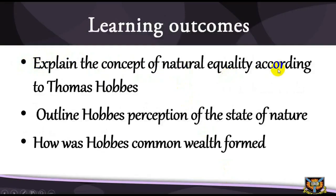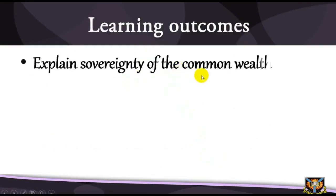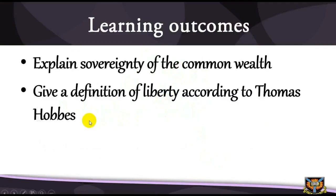Learning outcomes: when you have studied this session, you should be able to explain the concept of natural equality according to Thomas Hobbes, outline Hobbes's perception of the state of nature, explain how the Commonwealth was formed, explain the sovereignty of the Commonwealth, and give a definition of liberty according to Thomas Hobbes.